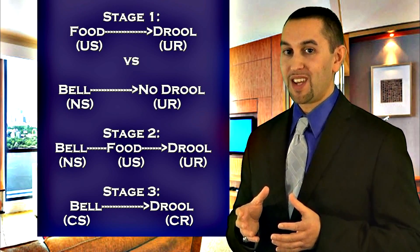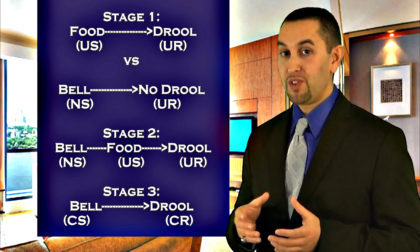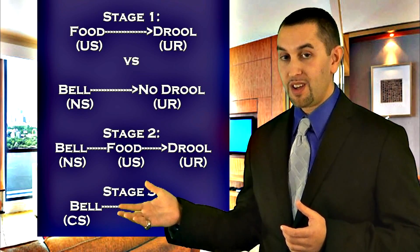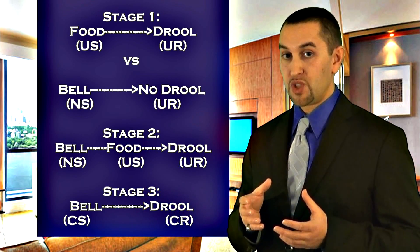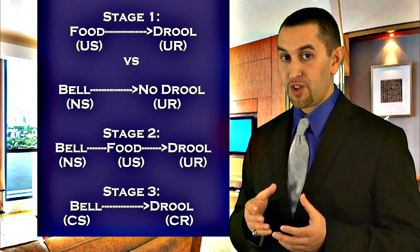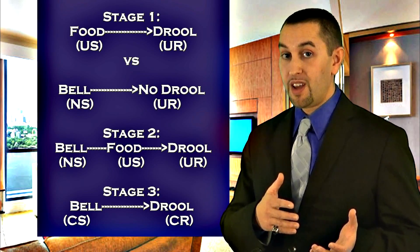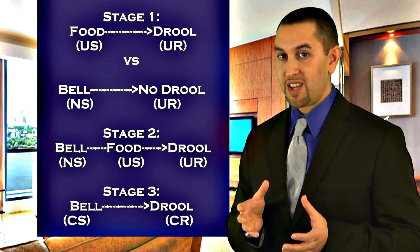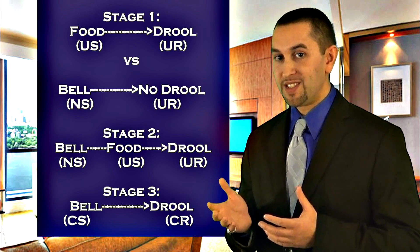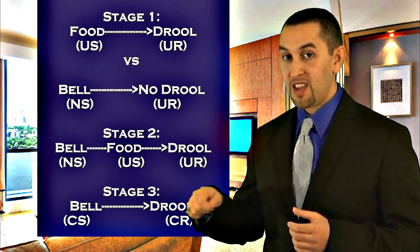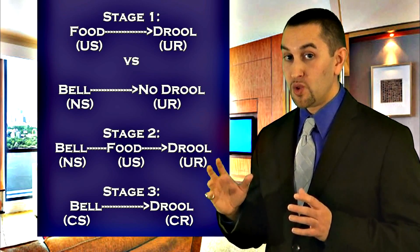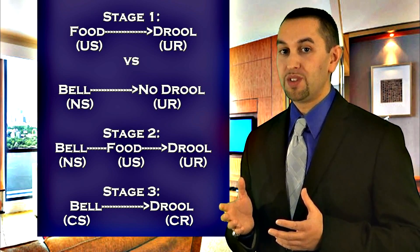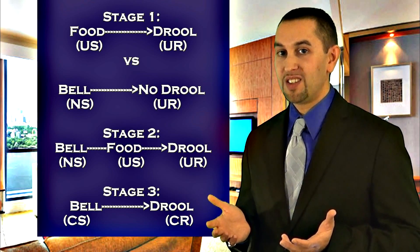Stage two is where the conditioning occurs. Pavlov would ring the bell, then give the dogs food. This was repeated multiple times so that the dogs could learn the connection between the bell and the food. Pavlov knew the dogs had made the connection when the bell made them drool. However, if he rang the bell and waited too long, the dogs wouldn't learn the connection. This is called temporal contiguity.